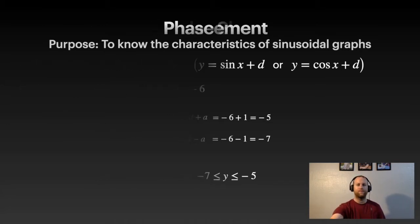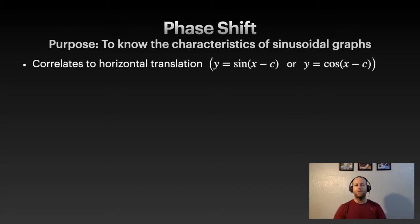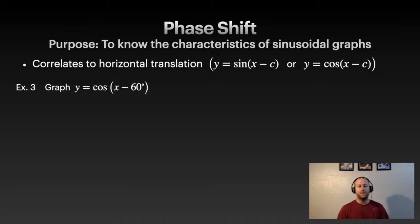Now we're looking at the next type of transformation: phase shift, which is the same as a horizontal translation. You may see it written as h or c depending on the textbook — they're the same thing, whether it's x minus h or x minus c. Let's graph the function y equals cos(x minus 60 degrees).